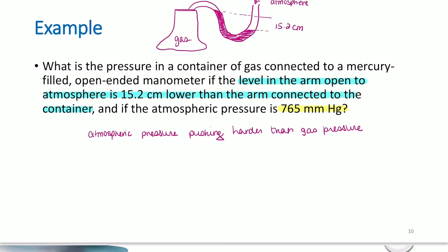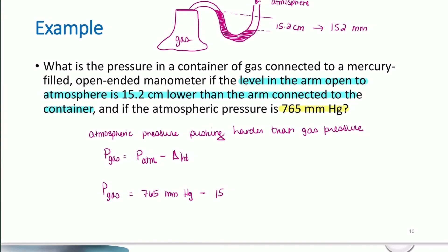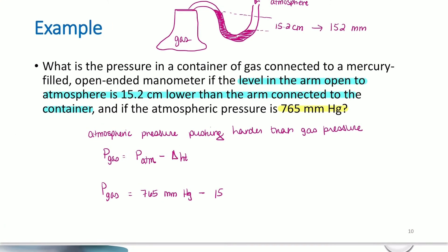We can relatively easily measure atmospheric pressure. The atmospheric pressure here is 765 millimeters of mercury. The atmospheric pressure is greater than the gas pressure. So the pressure of the gas will be equal to the pressure of the atmosphere minus the change in height. If the pressure of the gas was higher, it would be plus that change in height. But here it's minus that change in height. It's the pressure of my gas: 765 millimeters of mercury minus 15.2 centimeters. Don't let this mess you up.